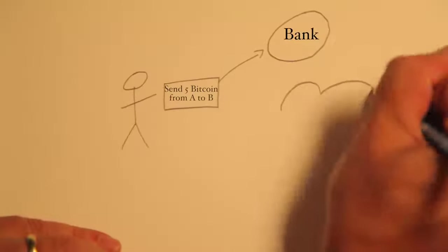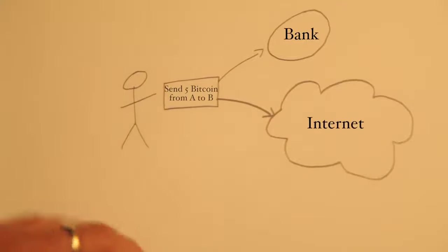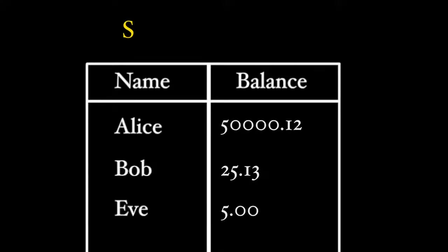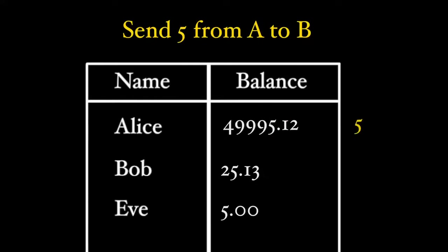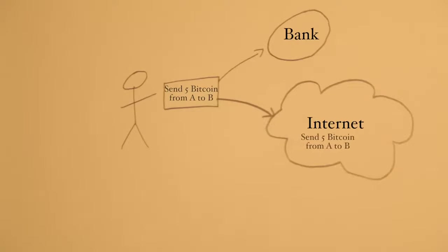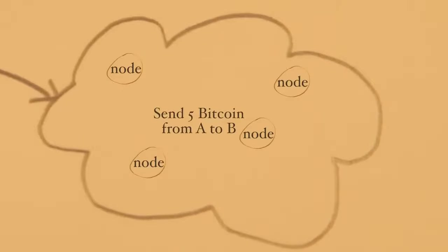With Bitcoin, all transactions are public. So instead of sending a private message to your bank to move a number from one place to another, your computer shouts it on a public internet channel, which all Bitcoin nodes are listening on. Two key things happen once a transaction is announced to the network.